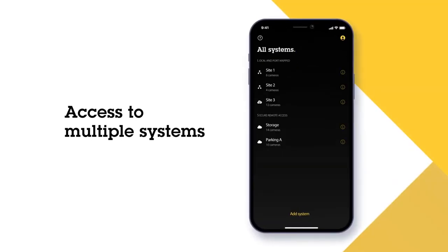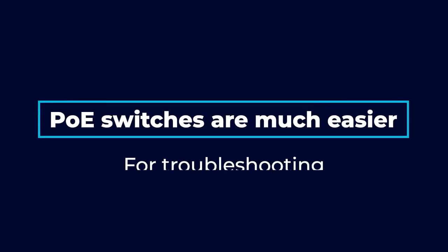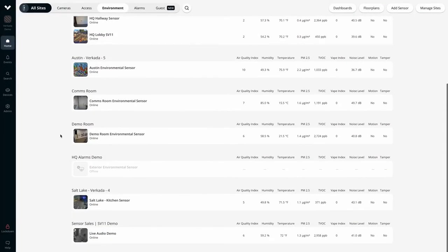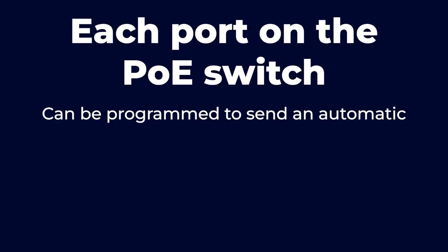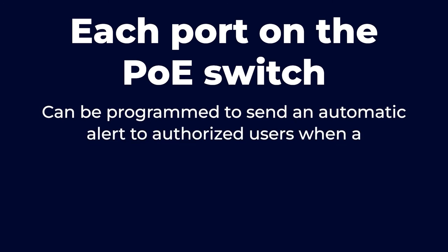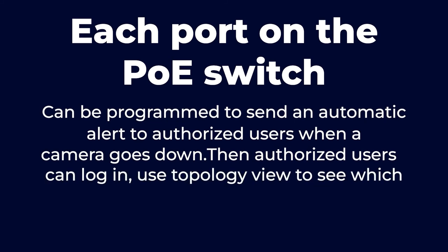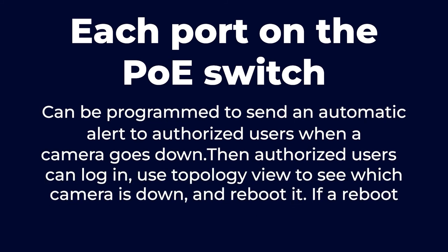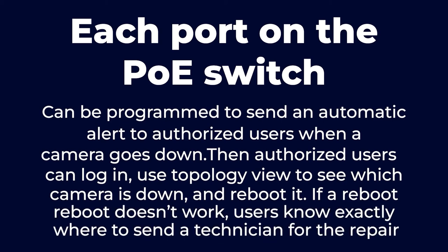With remote access and the GUI interface, PoE switches are much easier for troubleshooting. A sophisticated managed PoE switch can use a GUI interface to provide a topology view of the network and everything connected to it, which aids in troubleshooting when a system goes down. Each port on the PoE switch can be programmed to send an automatic alert to authorized users when a camera goes down. Then authorized users can log in, use topology view to see which camera is down, and reboot it. If a reboot doesn't work, users know exactly where to send a technician for the repair, speeding up the troubleshooting and repair process and minimizing downtime.